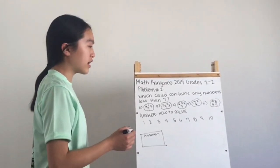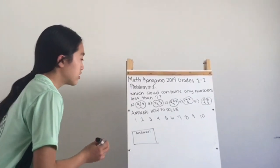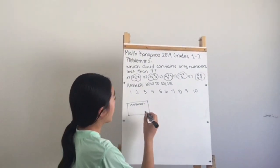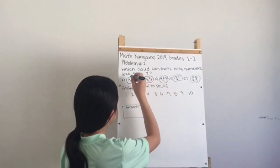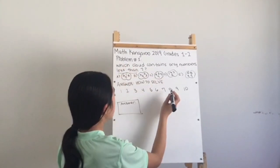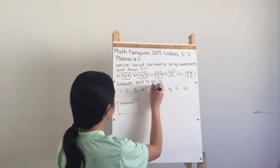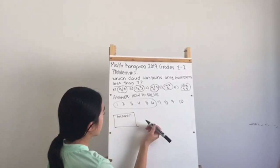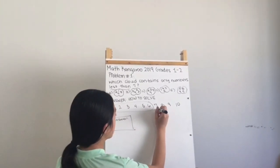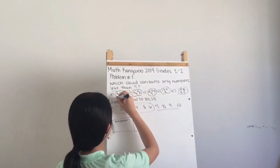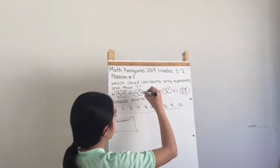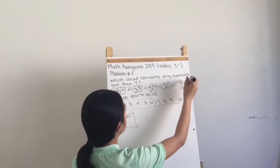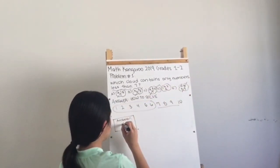Cloud E contains ten, eight, nine, and seven. To solve this, write down all numbers from one to ten and identify those less than seven. Eliminate any cloud containing numbers seven or greater, which eliminates A, B, C, and E, leaving the answer as D.